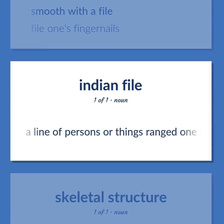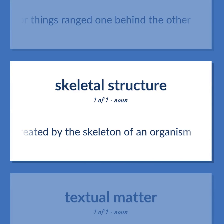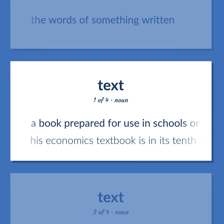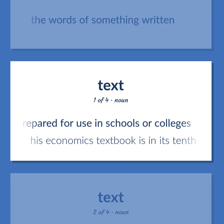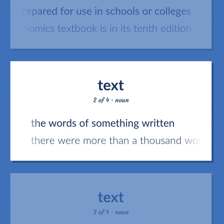File (continued): A line of persons or things ranged one behind the other. Any structure created by the skeleton of an organism. Text: The words of something written. A book prepared for use in schools or colleges. Example: His economics textbook is in its tenth edition. The words of something written. Example: There were more than a thousand words of text.